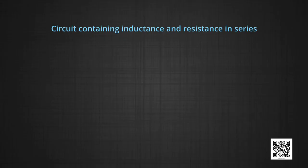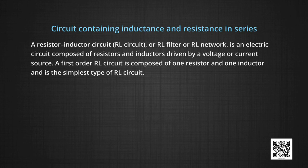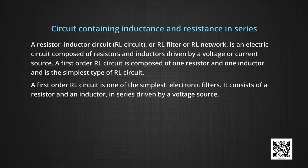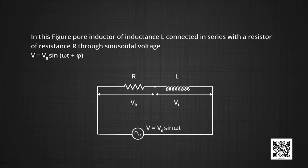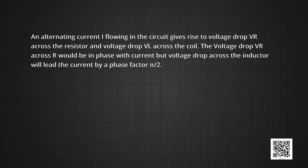Here we will start with a circuit containing inductance and resistance in series. A resistor-inductor circuit, that is RL circuit or RL filter or RL network, is an electric circuit composed of resistors and inductors driven by a voltage or current source. A first order RL circuit is composed of one resistor and one inductor and is the simplest type of RL circuit. It consists of a resistor and an inductor in series driven by a voltage source. In this figure, a pure inductor of inductance L is connected in series with a resistor of resistance R through a sinusoidal voltage source V equal to V naught sin(ωt + φ). An alternating current flowing in the circuit gives rise to voltage drop V_R across the resistor and voltage drop V_L across the coil.